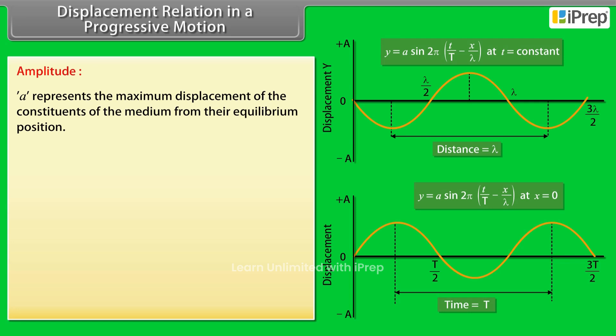Amplitude: a represents the maximum displacement of the constituents of the medium from their equilibrium position. It is called the amplitude of the wave.